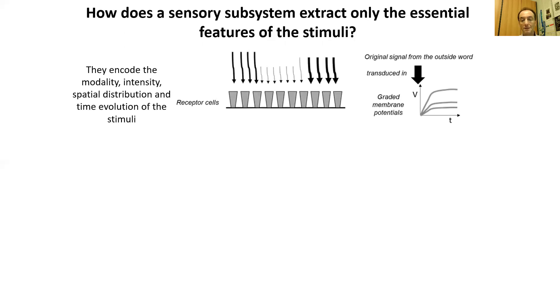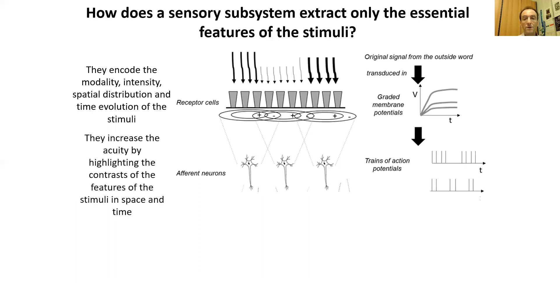How does the sensory subsystem extract only the essential features of any stimulus? The ensemble of sensory cells collects the multiple information of a stimulus and encodes this information in the values of graded membrane potentials. Then an architecture of afferent neurons increases sharpness by highlighting the contrast of the features of the stimuli in space and time. Every afferent neuron has a receptive field that works as a fuzzy set encompassing specific receptor cells and partially overlapping with adjacent afferent neurons. Afferent neurons encode information in trains of action potentials, and the action potentials generated by the afferent neurons are the ideal code for sending information up to the brain.